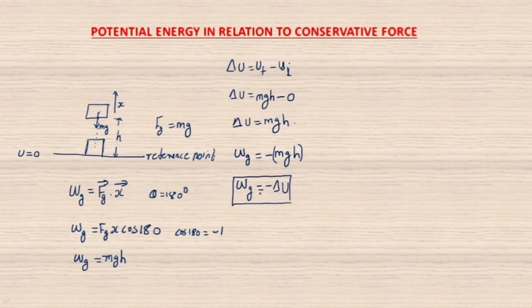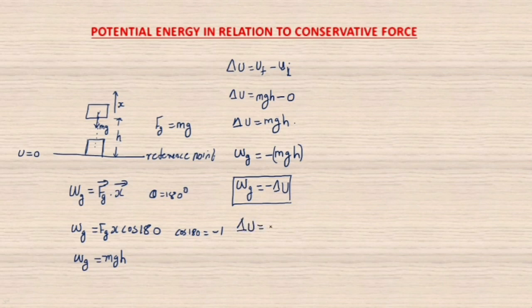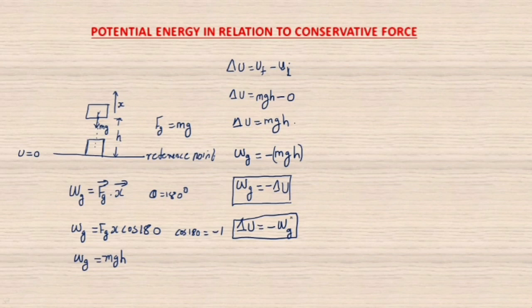This is an important conclusion: when the conservative force does work on a particle in a system, ΔU of the system equals the negative of the work done by the conservative force. So: ΔU = −W_g. We have now derived the formula: change in potential energy equals minus the work done by the conservative force.